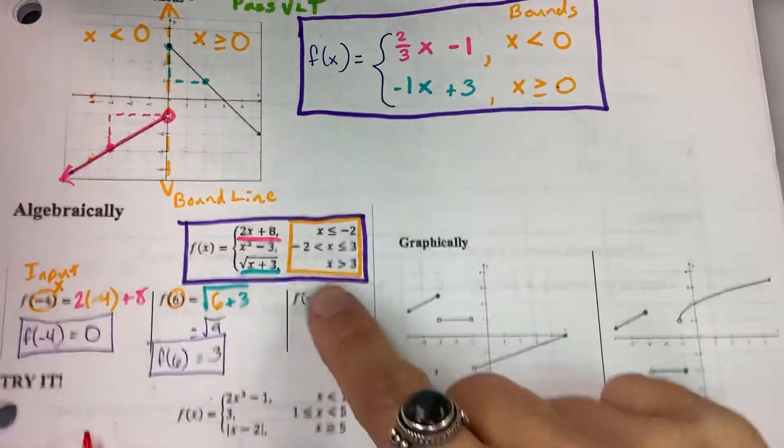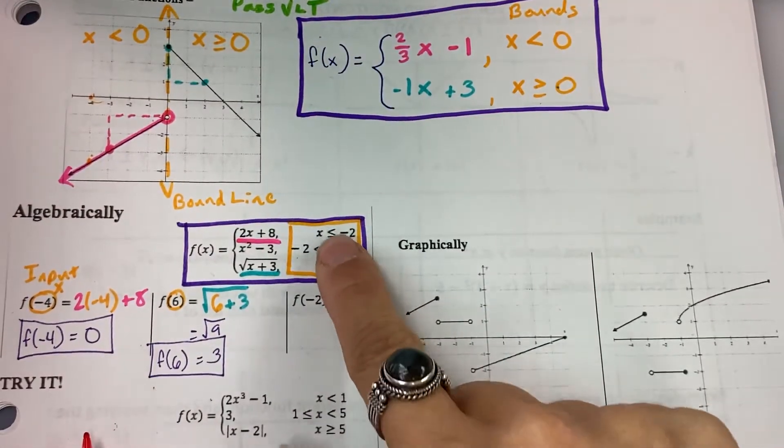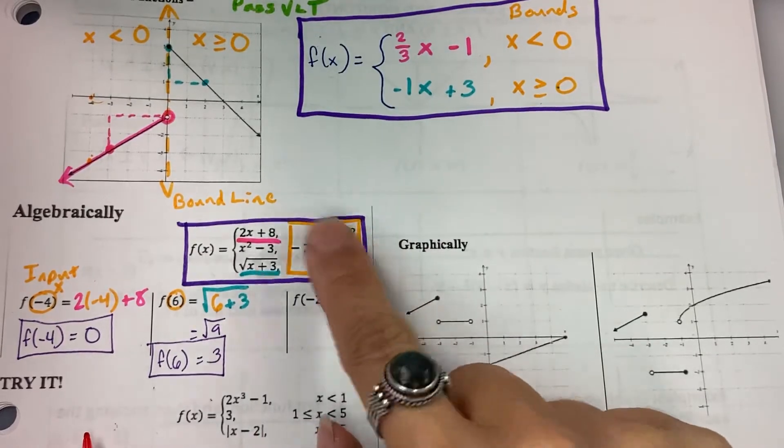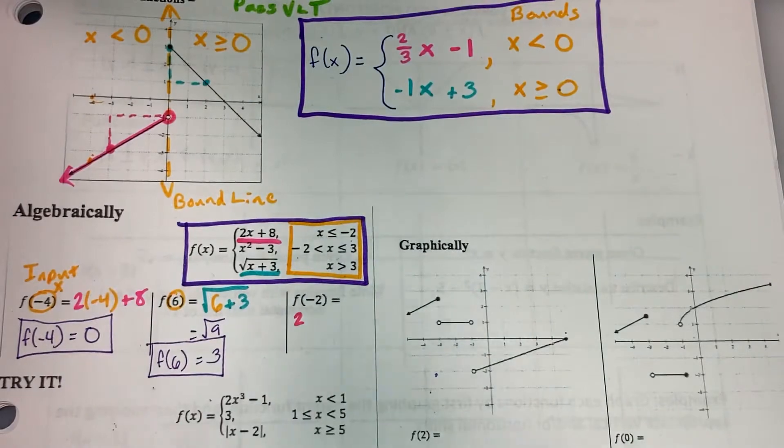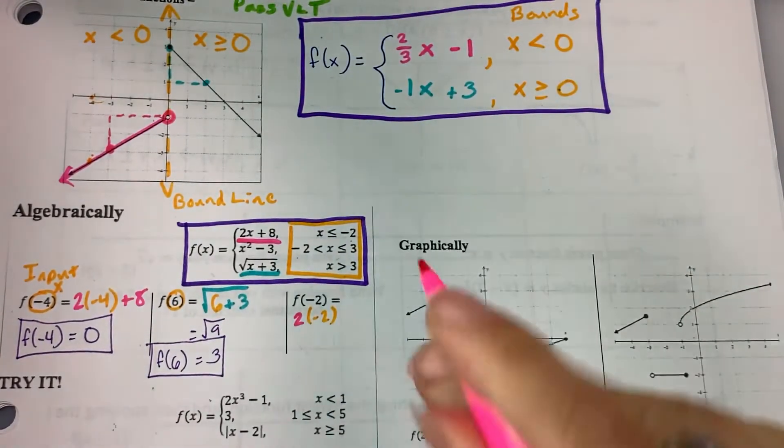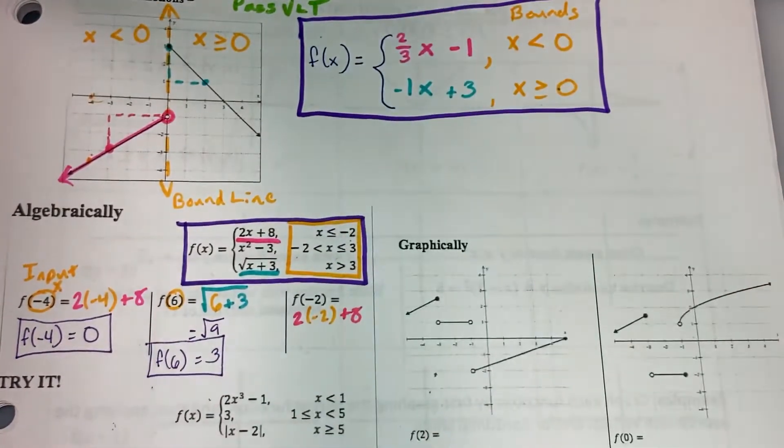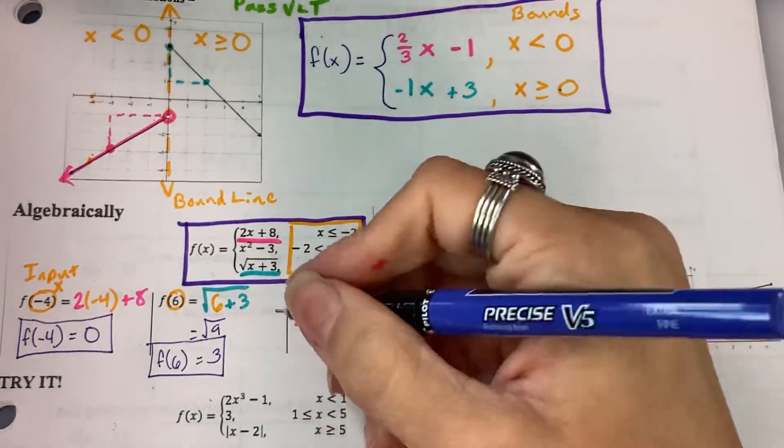Sorry about the abrupt stop there, folks. So, for negative 2, it is less than or equal to negative 2, so we are going to use that top function piece. So, 2 times negative 2, and then plus 8, and that would give me f of negative 2 equals 4.